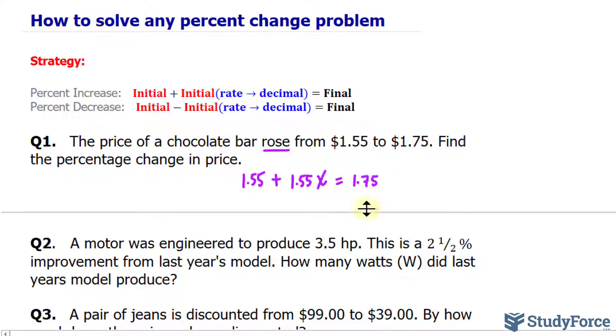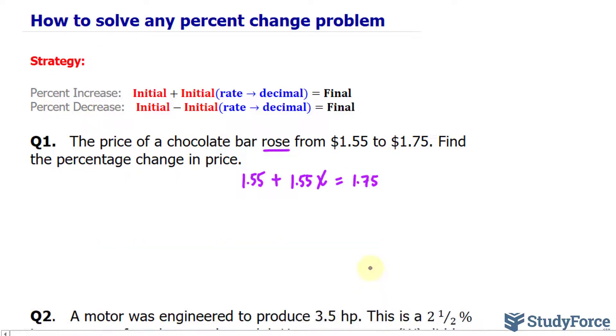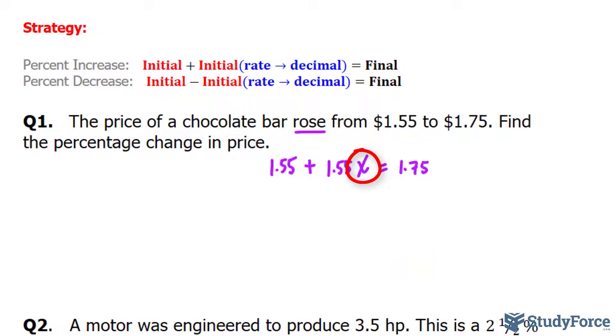Now we have to solve for x, so you do need to know a little bit of algebra here. We'll rearrange so that this term is isolated on the left side. I'll bring $1.55 over to the right side, or in other words, subtract $1.55 from both sides.